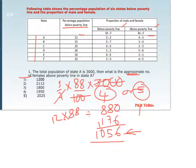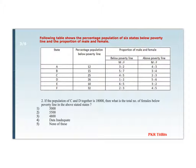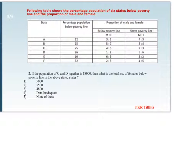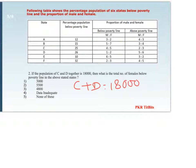Coming to the next question: the population of C and D together is 18,000, then what is the total number of females below poverty line in those states? For C the ratio is 4 is to 5, and for D it is 1 is to 2. However, we cannot calculate the individual population values of C and D separately, so this is data inadequate — option 4 is the answer.